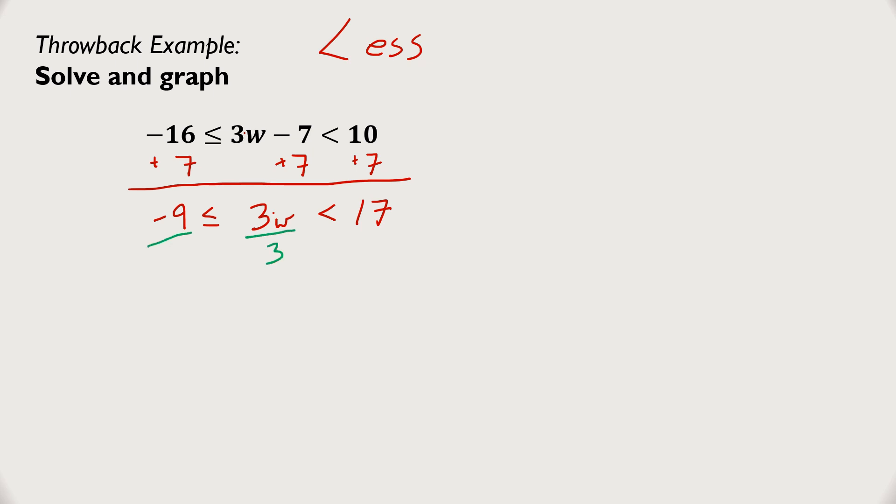3w is being multiplied by 3, so we're going to divide each part by 3. First we're doing this, therefore we have to do all the other ones. We end up getting that negative 3 is less than or equal to w, which is less than 5 and 2 thirds. That's my answer.